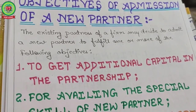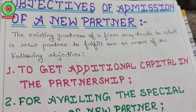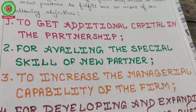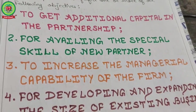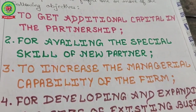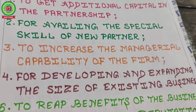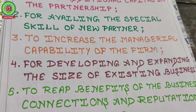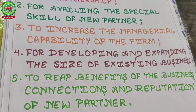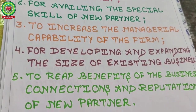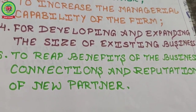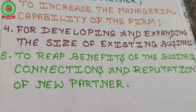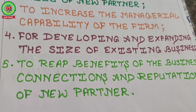Before starting, let's see the objectives of admission of a partner. The existing partners of a firm may decide to admit a new partner to fulfill one or more objectives: first, to get additional capital; second, for availing the special skill of the new partner; third, to increase the managerial capability of the firm; fourth, for developing and expanding the existing business; and fifth, to reap the benefits of the business connection and reputation of the new partner.